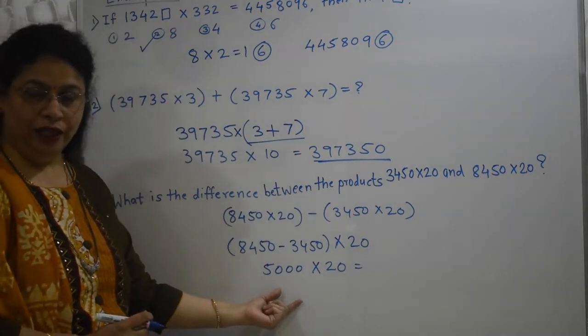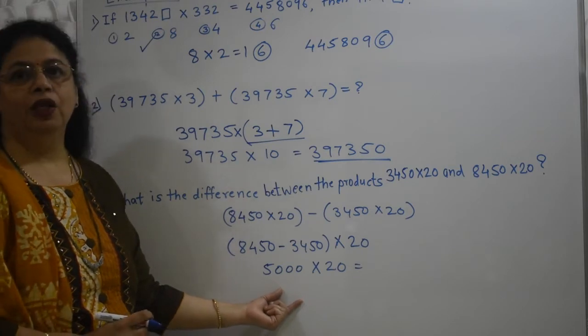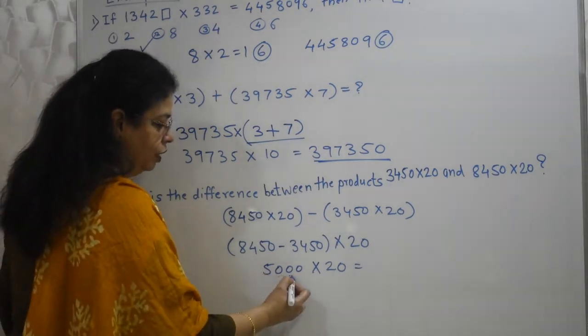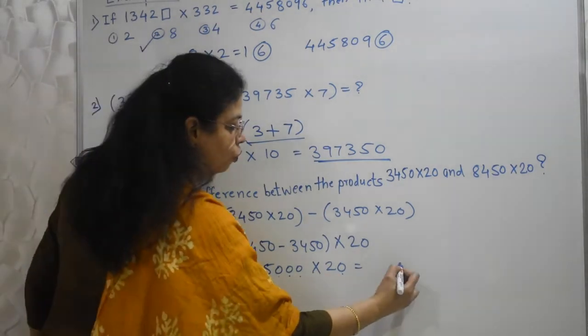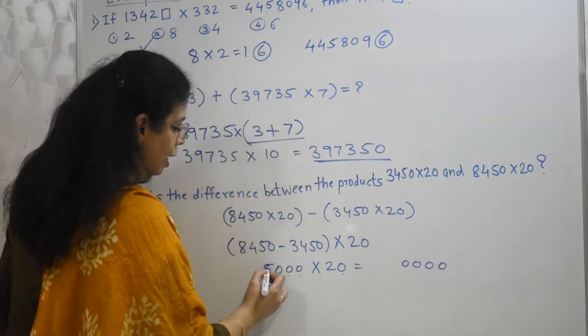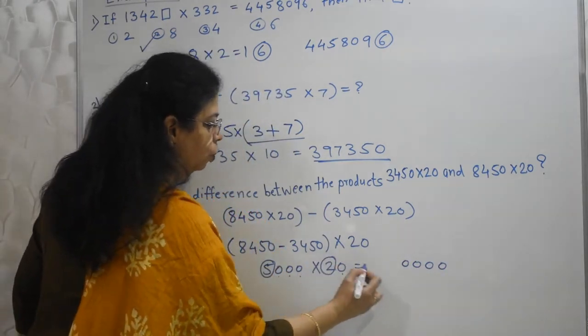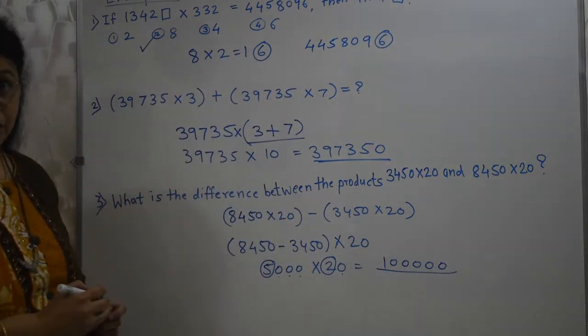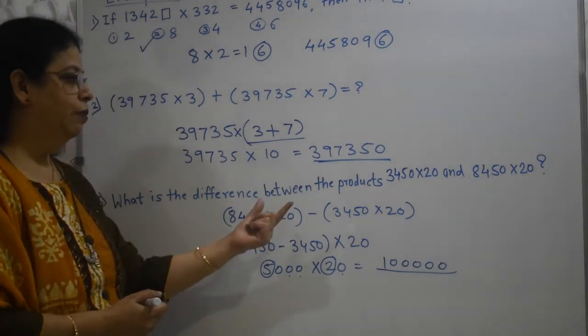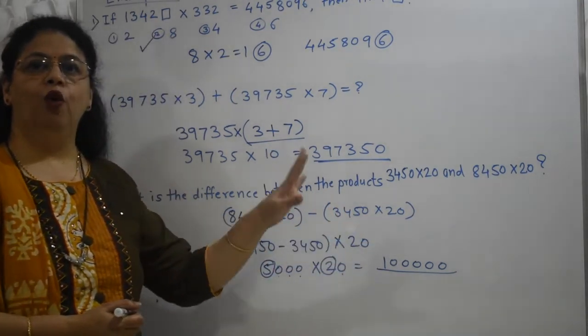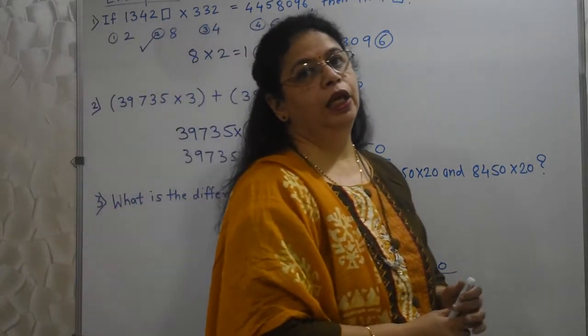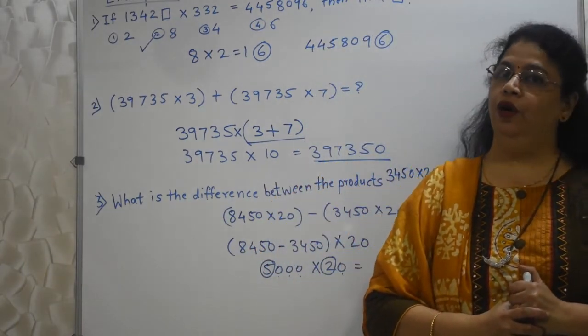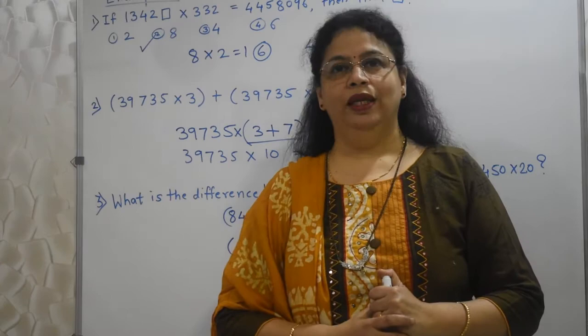As we did earlier, the multiplication like this, when we have 0's at the end, multiplication is the most simplest form. What I have to do? I count the 0's: 1, 2, 3, 4. So 4 0's straight away I will give here. And then numbers, 5 into 2, 10. So my answer is ready. I have seen students multiplying this, then multiplying this. After doing both the multiplications, then they do subtraction. Please don't do that. It is going to take lot of time, which we cannot afford.